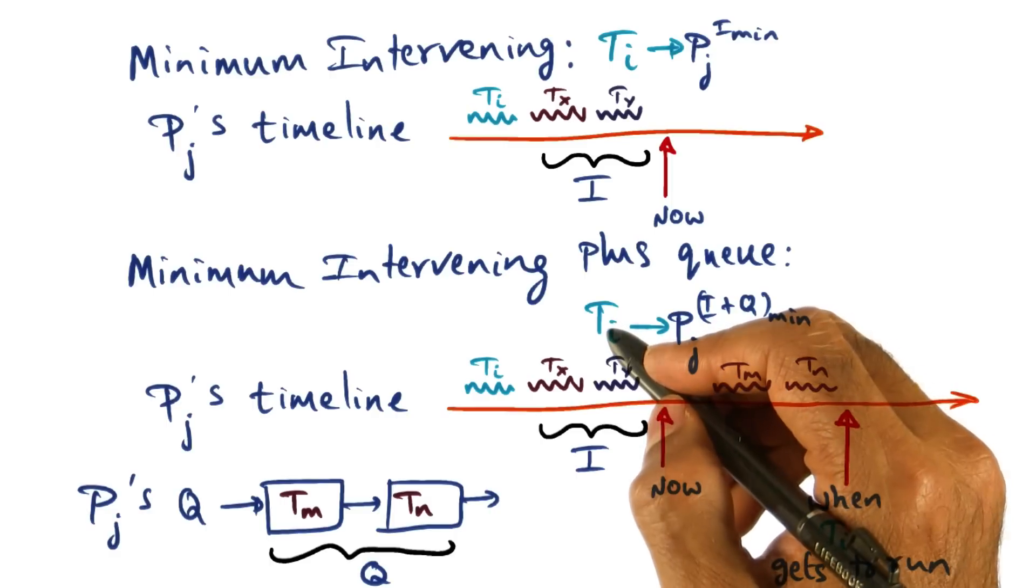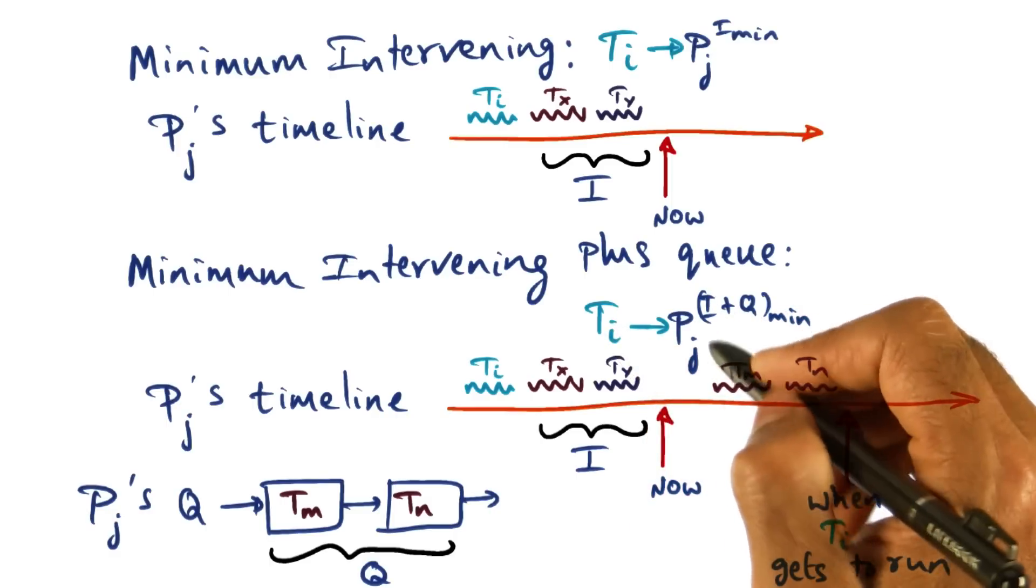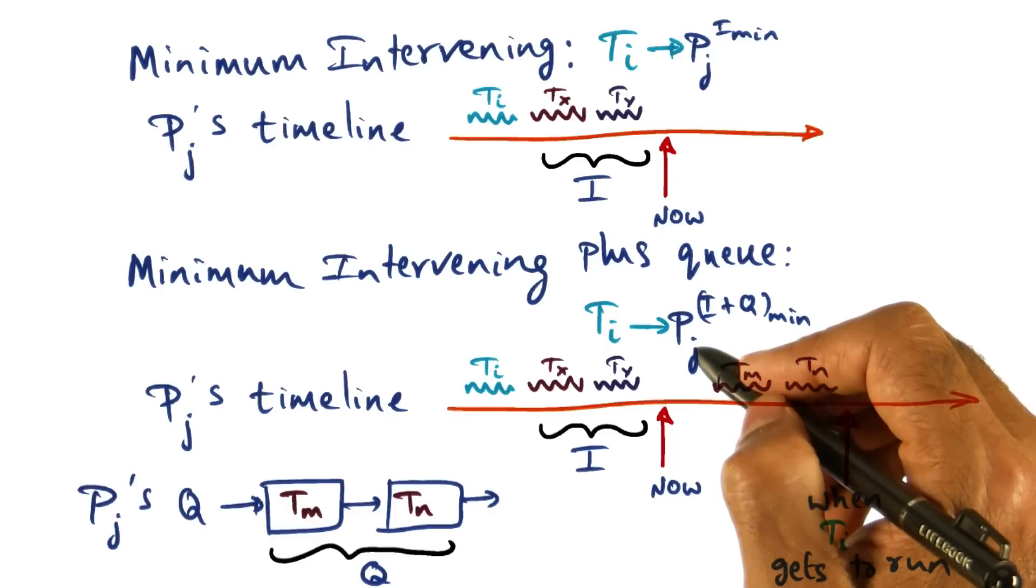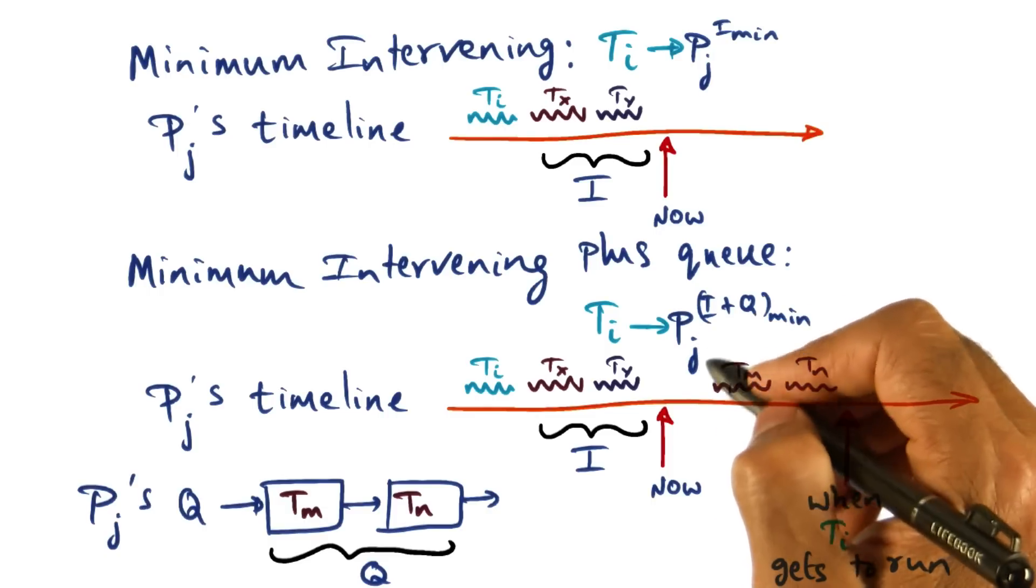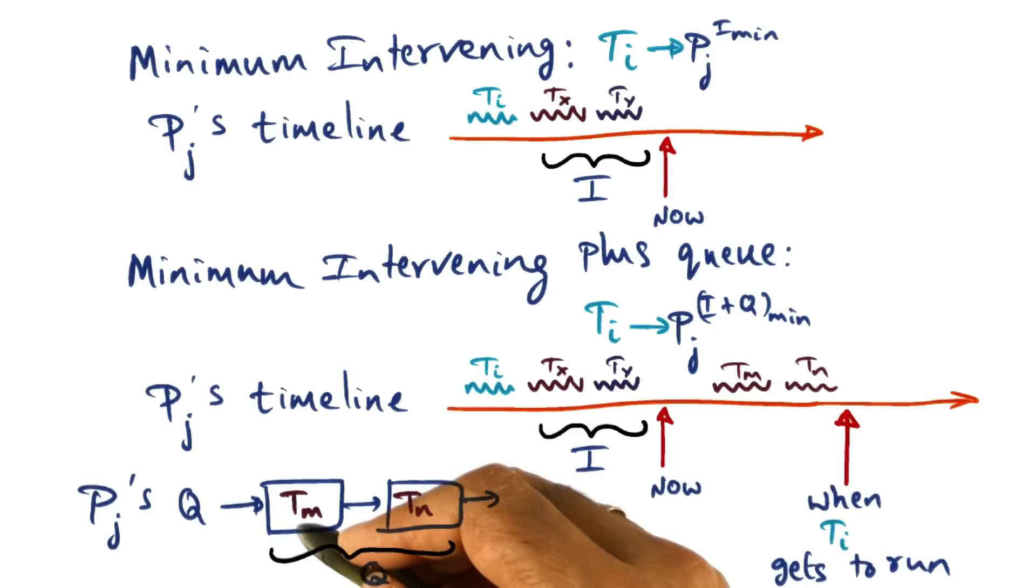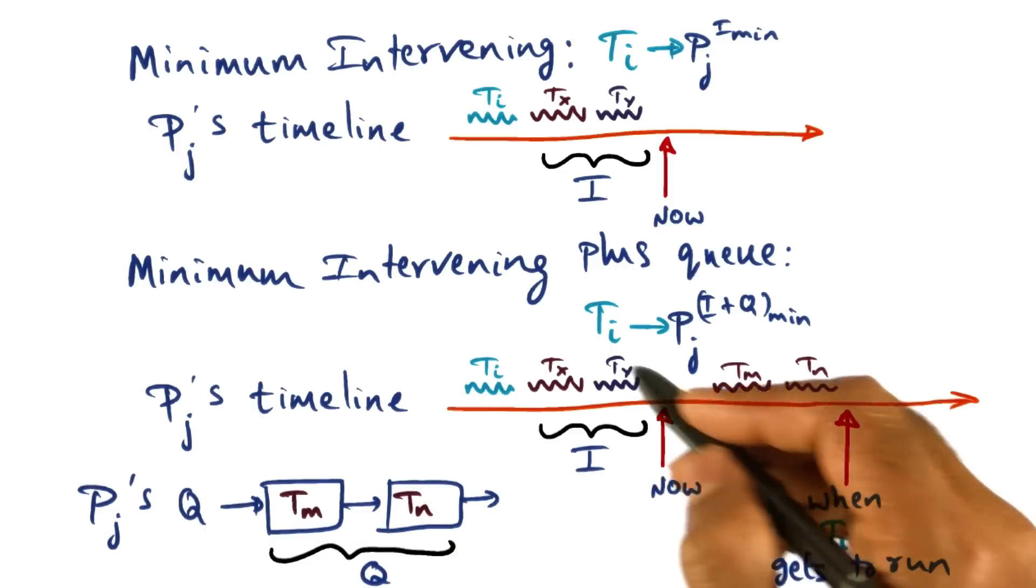Well, if ti is going to be scheduled on this particular processor pj, maybe there's a scheduling queue associated with pj which already has some number of threads to be run.